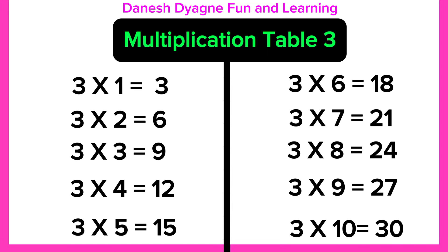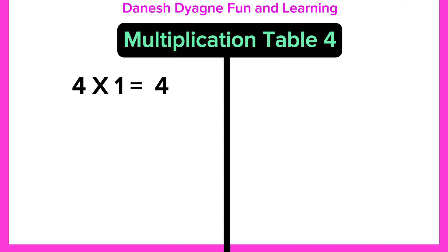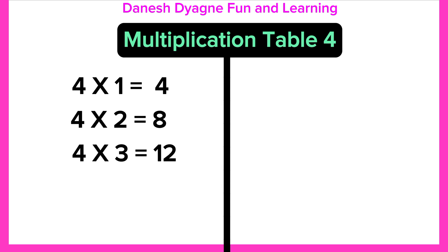3 times 10 equals 30. 4 times 1 equals 4. 4 times 2 equals 8. 4 times 3 equals 12. 4 times 4 equals 16.